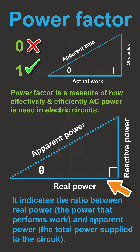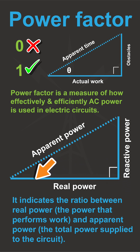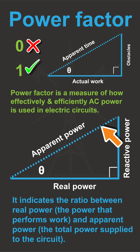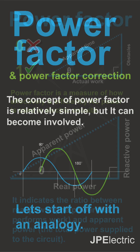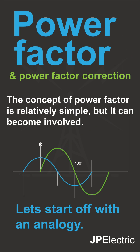This triangle indicates a ratio between real power — the power that actually does any work — and the apparent power, which is the total power supplied to the circuit. It's a relatively simple concept; it's about saving power in an installation.